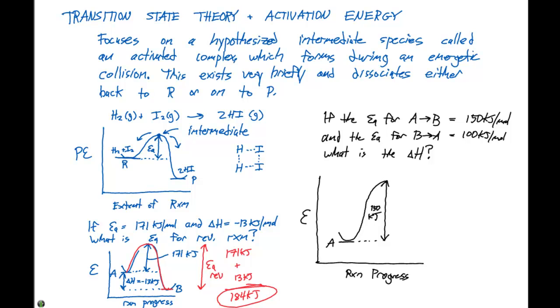And we know going from B back to A is going to be 100 kilojoules per mole. So that means that B has to be 100 kilojoules per mole, because the reverse reaction's energy of activation right here has to be 100 kilojoules per mole.